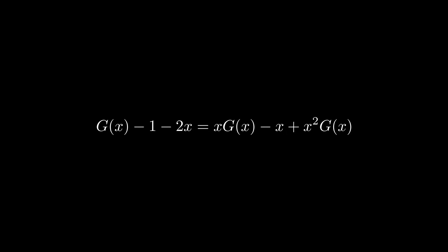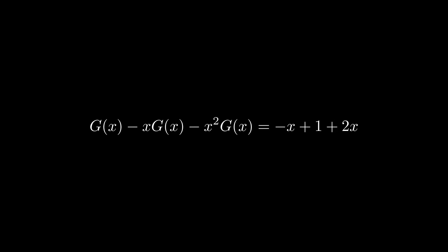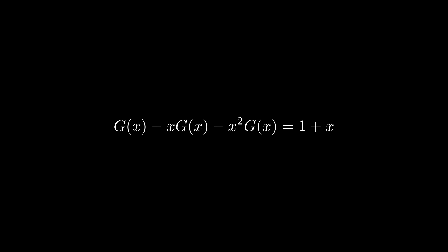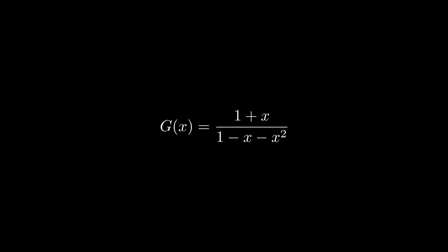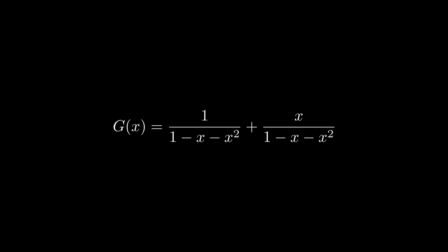Now we can put it in unfactored form and solve for the generating function in terms of x. After doing that, we will use partial fraction decomposition to further simplify it. The reason for this will become clear later. So what we will do is factor the denominator of the first term on the right side using the quadratic formula.